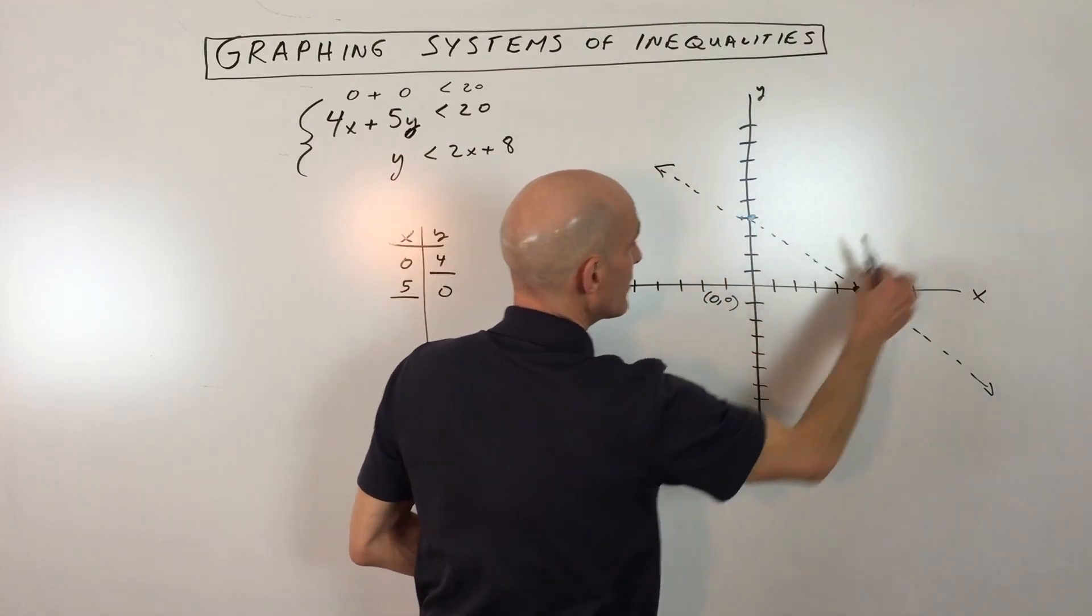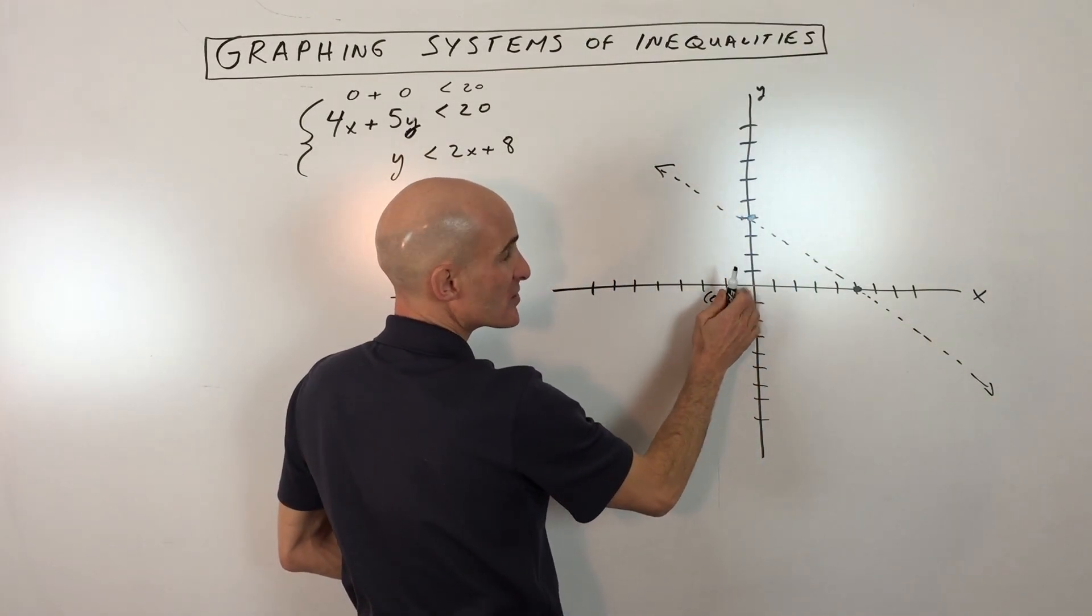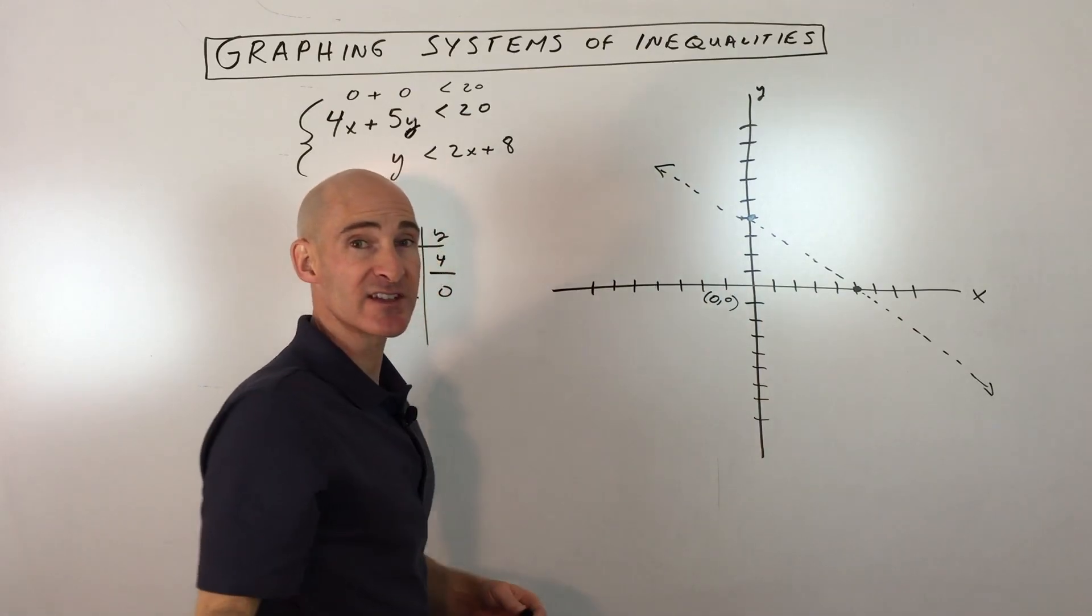If it was false, we'd shade the other side of the line. But since this is true, we're going to shade where this test point is. And this is the technique that I normally use.